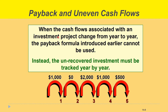Payback period with uneven cash flows. When the cash flows associated with an investment project change from year to year, the payback formula introduced earlier cannot be used. Instead, the unrecovered investment must be tracked year by year. If you have different amounts in each year for the return on the investment, we cannot call it an annuity, and you have to use a different method for finding the payback period.